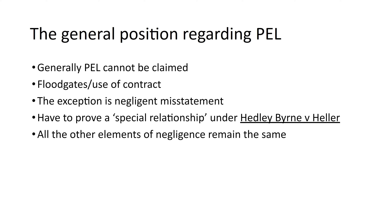The exception to this is negligent misstatement. In Carna v Crane Christmas, the Court of Appeal held that you couldn't claim for a negligent misstatement, but Lord Denning made a dissenting judgment. That dissenting judgment was persuasive in Hedley Byrne v Heller, when the House of Lords overruled Carna v Crane Christmas and said you can claim for negligent misstatement where there is a special relationship. Special relationship just changes proximity; all the other elements of negligence remain the same.